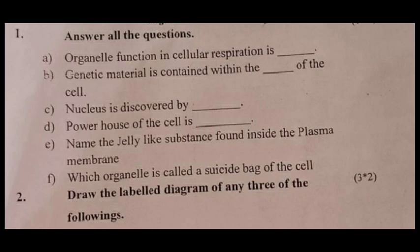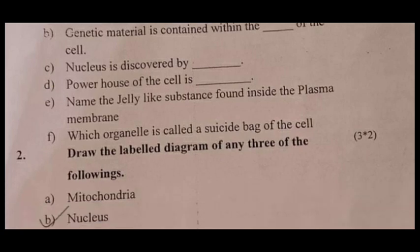The function in cellular respiration is blank. Genetic material is contained within the blank of the cell. Nucleus is discovered by blank. Powerhouse of the cell is blank. Name the jelly-like substance found inside the plasma membrane is blank. Which organelle of the cell is called the suicide bag of the cell? Important question.